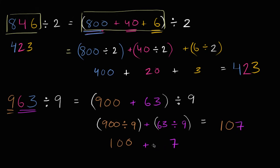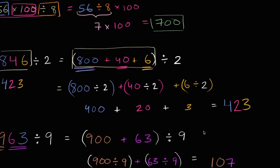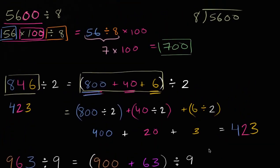Once you get some practice you'll say: 9 goes into 900 a hundred times, 9 goes into 63 seven times, so 9 goes into 963 107 times. Hopefully you found that fun. This is useful stuff, because all the time — doing your finances or trying to calculate the check at a restaurant — you're going to find it really valuable to be able to do this type of division, even without paper.